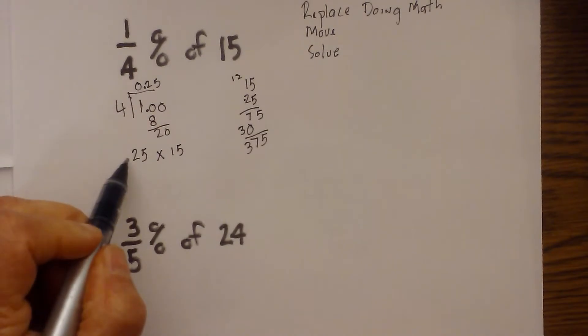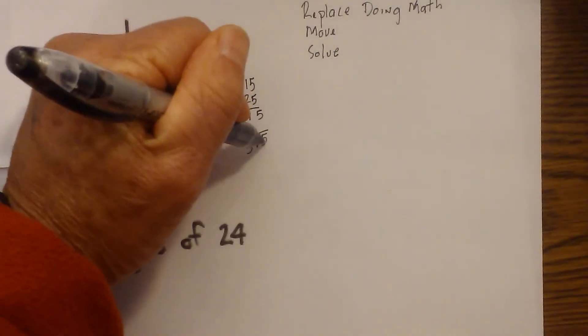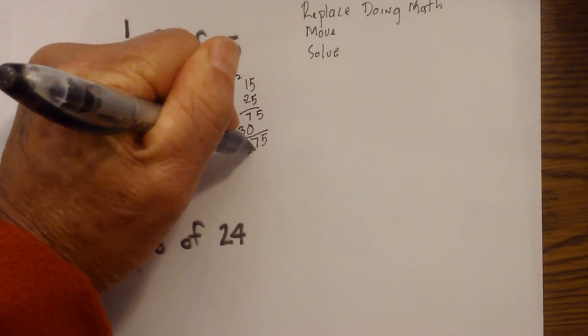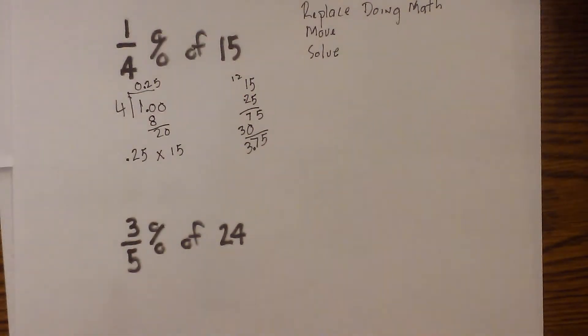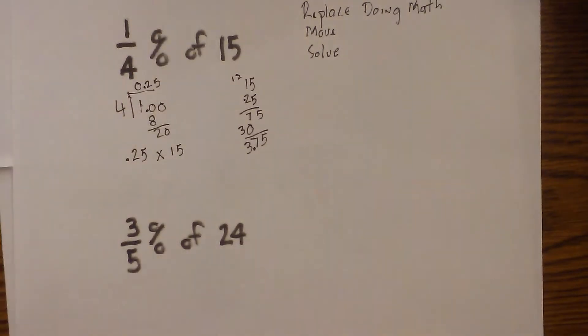But remember I have 2 numbers to the right of the decimal. So I need to do the same with this. So I move it 1, 2, so it becomes 3.75. So 1 fourth percent of 15 is equal to 3.75.